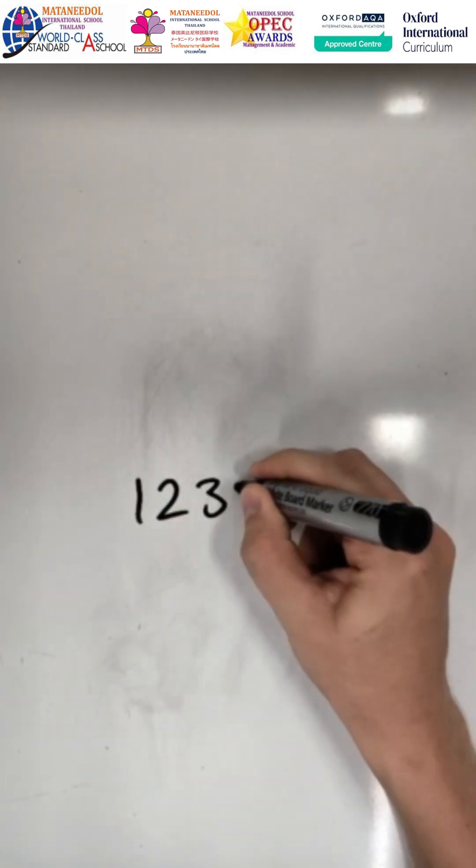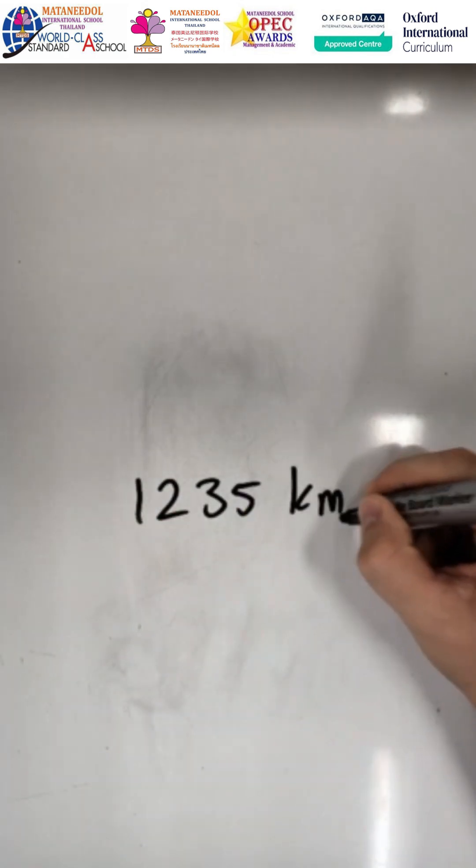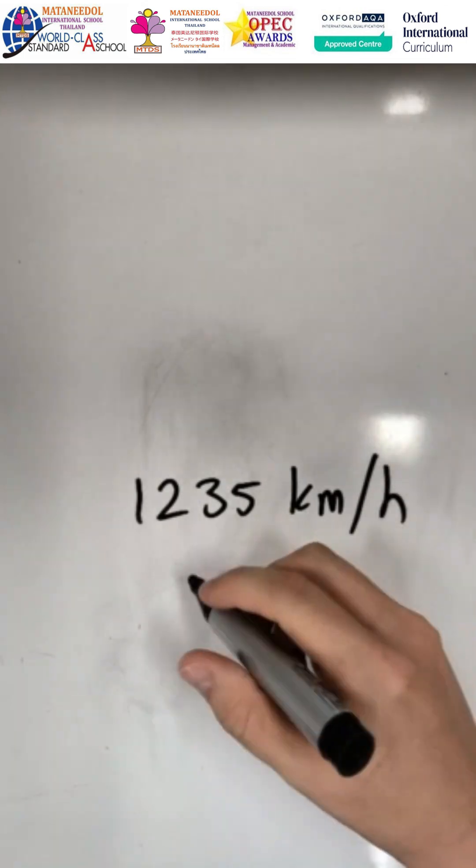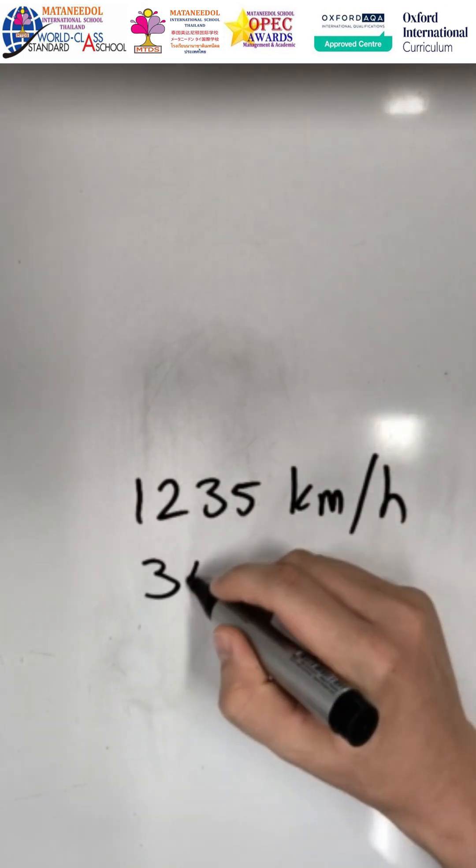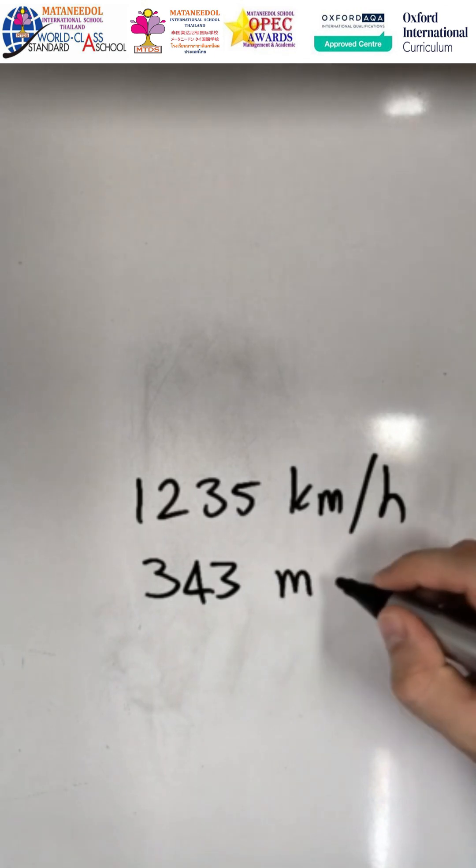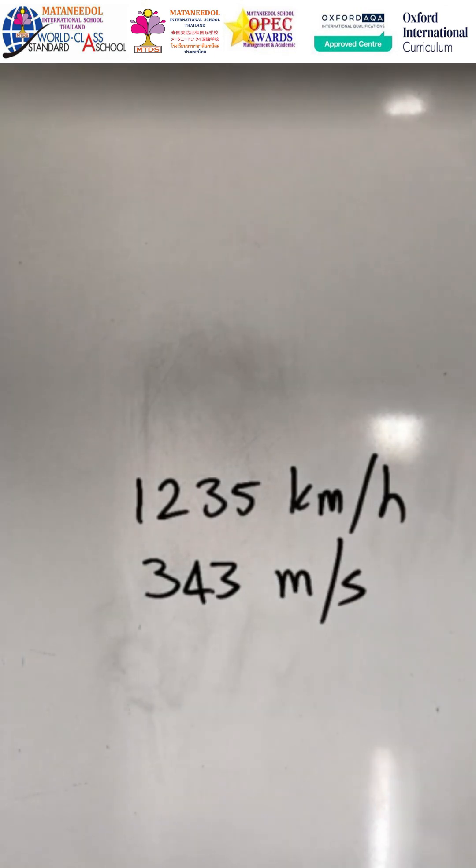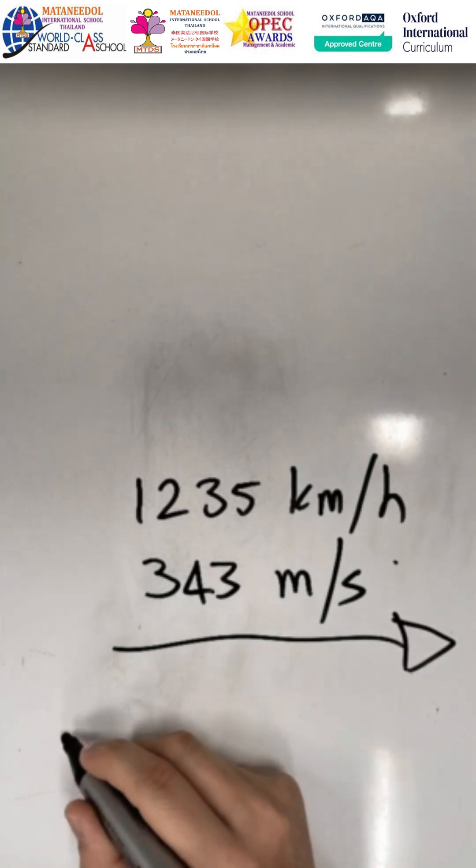Okay, so sound and light travel at very different speeds. The speed of sound is about 1,235 kilometers per hour, and that is about 343 meters per second. Quite fast, right? Let's see the difference between the speed of sound and the speed of light.